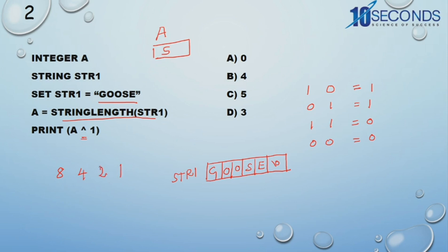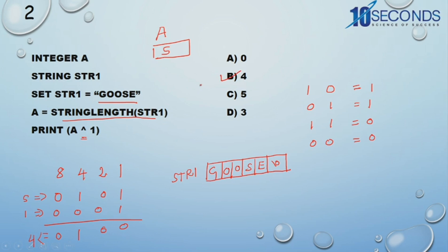So in the 8, 4, 2, 1 logic: 5 in binary is 0101, because 4 plus 1 is 5. And 1 in binary is 0001. Now we do exclusive OR: 1 XOR 1 is 0; 0 XOR 0 is 0; 1 XOR 0 is 1; 0 XOR 0 is 0. So the result is 0100, which means this is 4 actually. So the answer is 4. Here the answer is option B — B is the correct option.